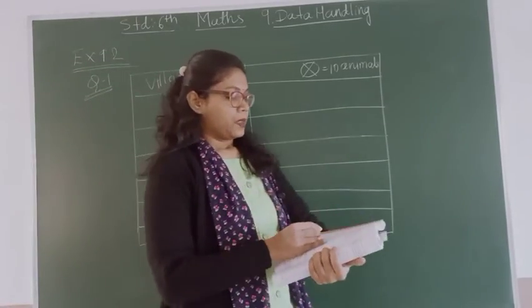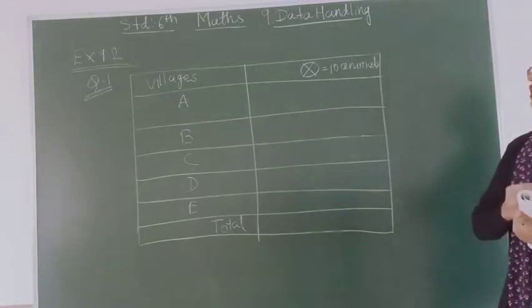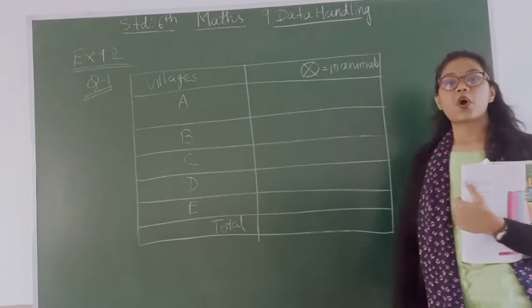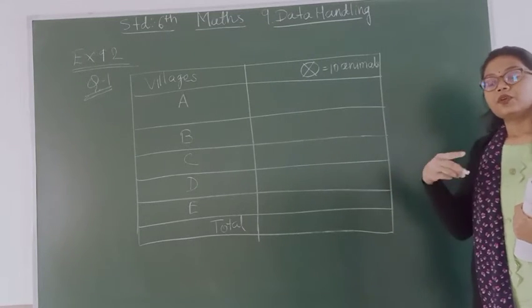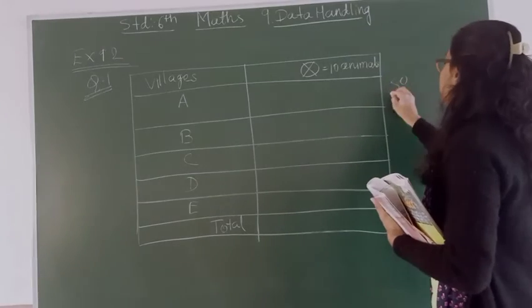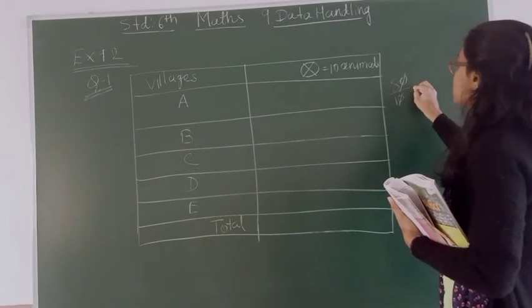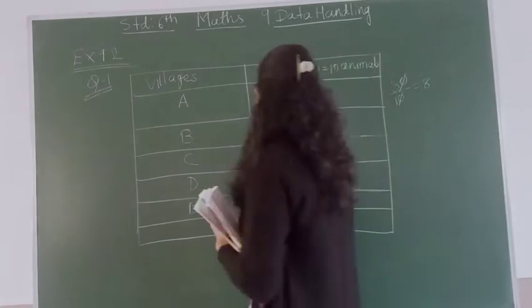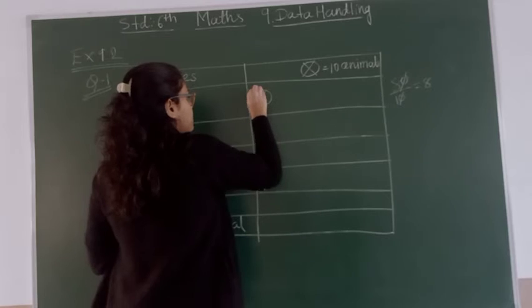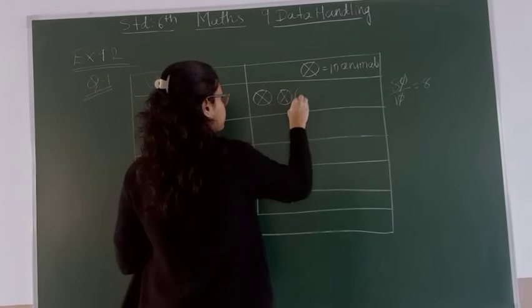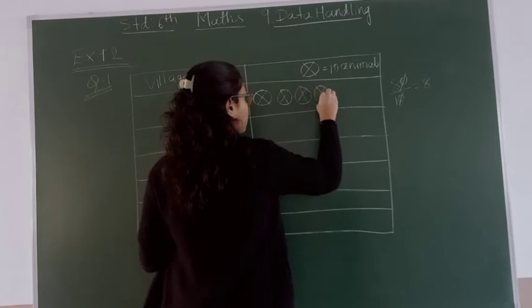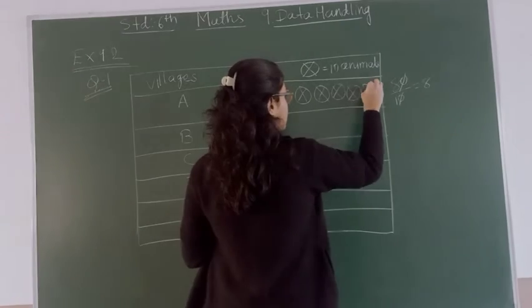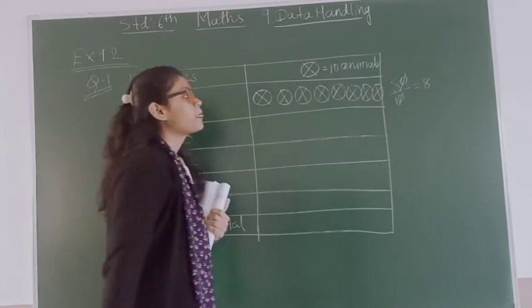Now for village A there are 80 animals, so you can do the division: 80 divided by 10. So you can get 8 symbols. You can write them like this: 10, 20, 30, 40, 50, 60, 70, and 80.